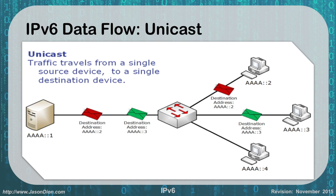In IPv6, we have three data flows like we did in IPv4, but they're a little different. The first one is the same: unicast. The only difference is that instead of using an IPv4 address to go from a single sender to a single destination, we're going to use an IPv6 address. In this case, four A's, a bunch of zeros, and a one is our server, with device two and device three as the recipients. This is the same as IPv4 except we're using IPv6 addressing.